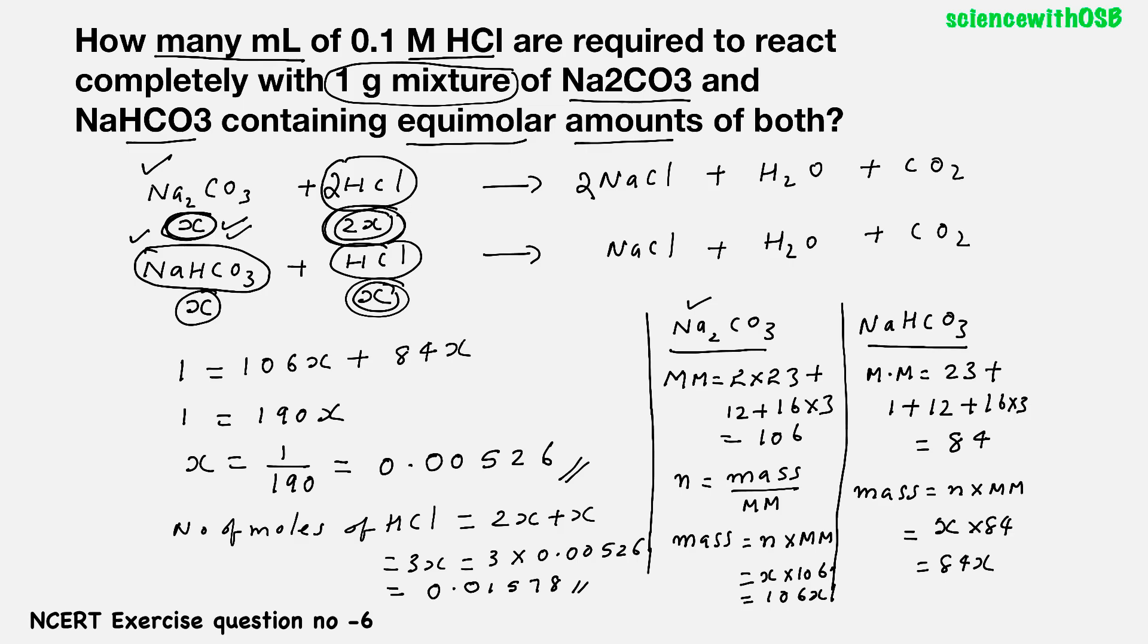Once you get total number of moles of HCl, then it is very easy for you to find the volume because molarity is given. What is the equation? Molarity is equal to number of moles of HCl by volume in liter. So what is volume? Number of moles by molarity. What is number of moles? We find it. 0.01578 by 0.1. What is that? 0.1578 liter. If you want answer in milliliter, you can write like 157.8 milliliter. Both are okay.